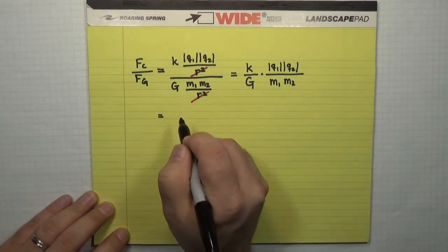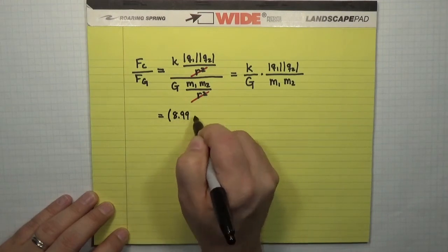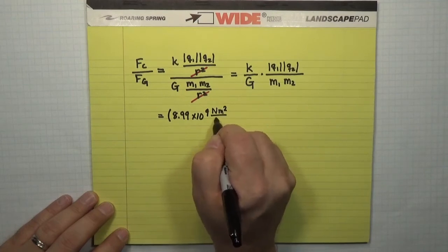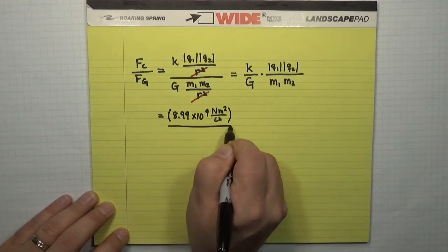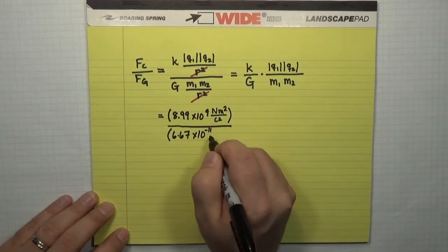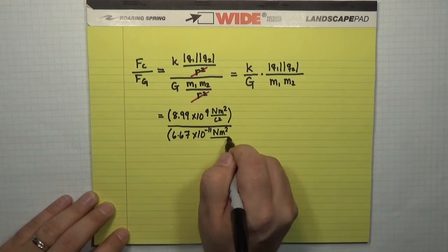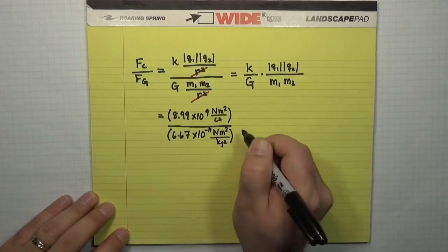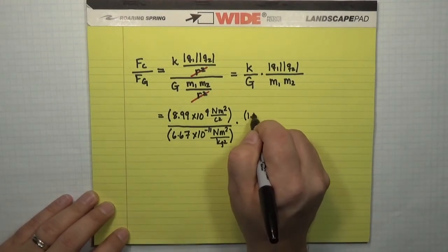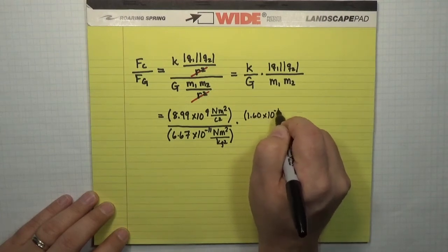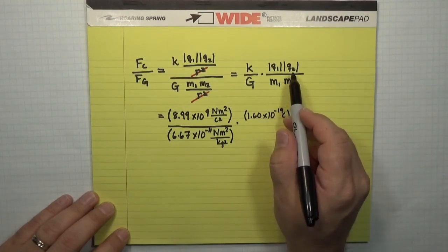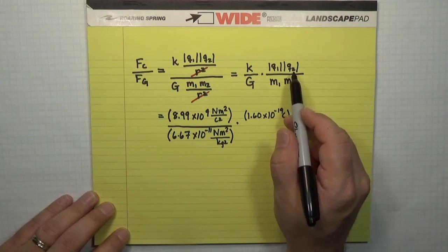So, putting those numbers in, Coulomb's constant is 8.99 times 10 to the 9 newton meters squared per coulomb squared. Newton's constant is 6.67 times 10 to the minus 11 newton meters squared, see how those units are kind of similar, per kilogram squared times the fractional ratio of the charges and the masses. So, this is 1.60 times 10 to the minus 19 Coulombs for the proton. And, we took the absolute value in Coulomb's law.